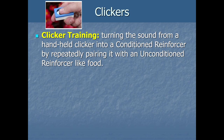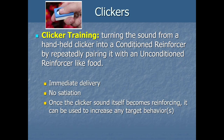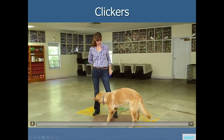You can get clickers cheaply on Amazon in bulk. With clicker training, we turn a little popping sound into a conditioned reinforcer by repeatedly pairing it with an unconditioned reinforcer like food. This is totally respondent conditioning — just like Pavlov. It starts as a neutral stimulus, but because it always shows up right before an unconditioned stimulus, it eventually becomes a CS — a conditioned reinforcing stimulus. The benefit is that clicks can be delivered faster than food; they happen immediately after the behavior, and the clicker doesn't cause satiation the way food does.